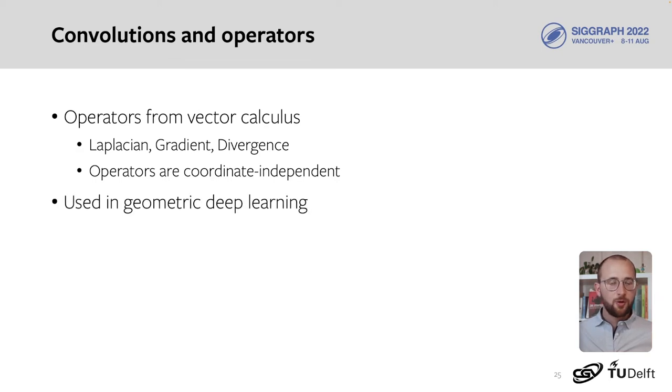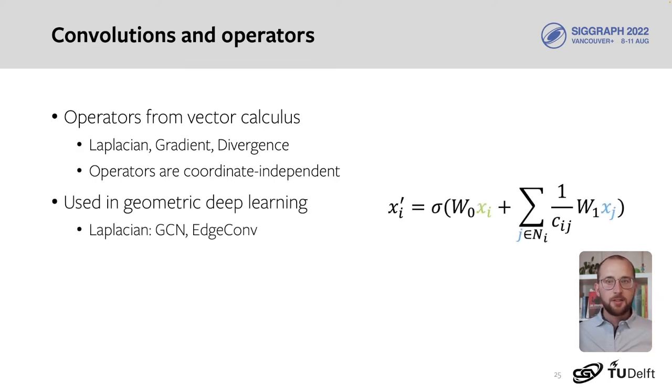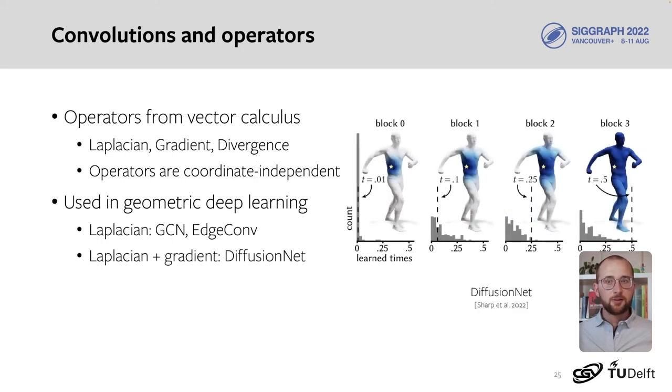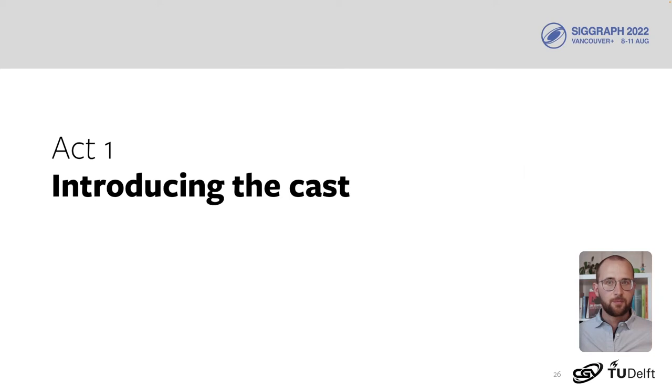Operators have been used before in geometric deep learning. GCN uses the graph Laplacian, and EdgeConv's design is inspired by the Laplacian. DeltaConv learns diffusion times on the surface with an eigendecomposition of the Laplacian and applies the spatial gradient. In DeltaConv, we use additional operators and connect them in different ways. For example, we retain directional information throughout the network by maintaining vector features.